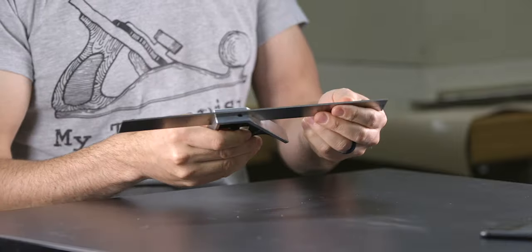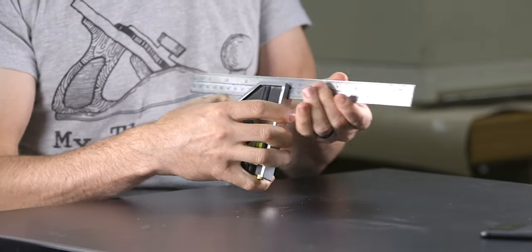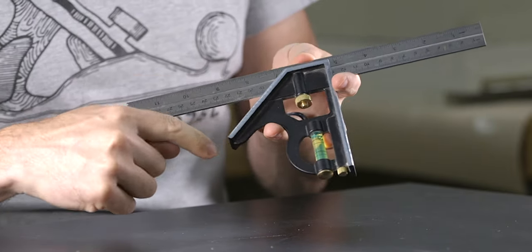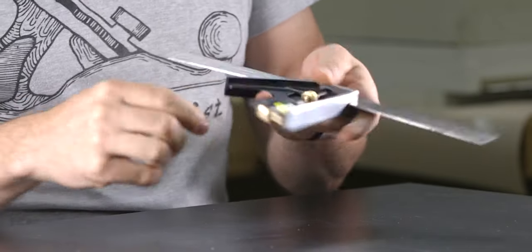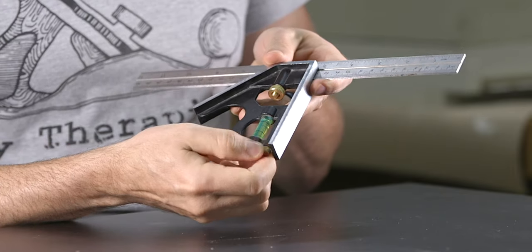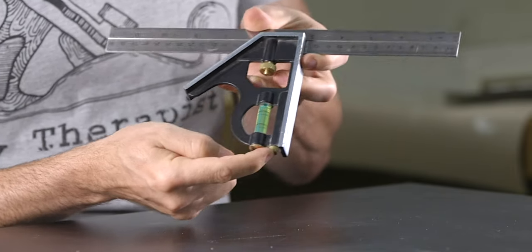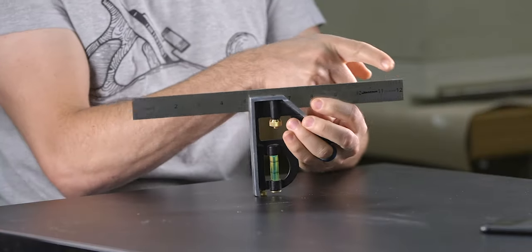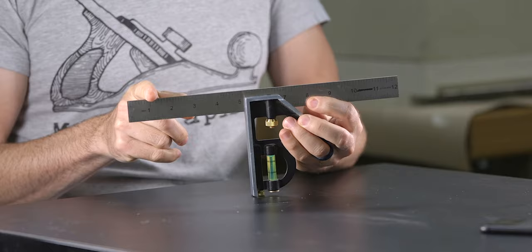If you're new to the combination square and have questions about what it is and what it can do, then stick around. A combination square consists of a straight blade that slides along a handle, and the handle is made up of an anvil and a shoulder which is at a 45 degree angle to the blade. This particular combination square also is fitted with a leveling vial and a scribing tool which we'll talk about later. The most common two sizes are the 12 inch like the one I have here and a six inch version.